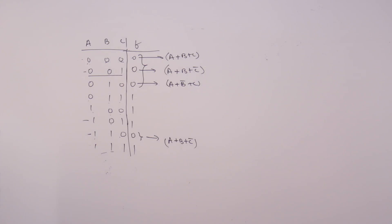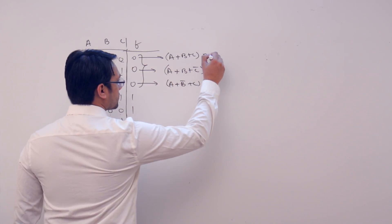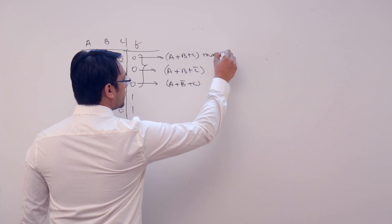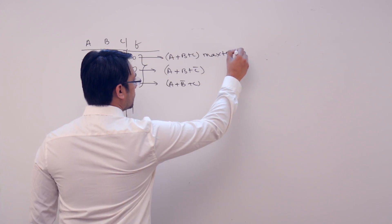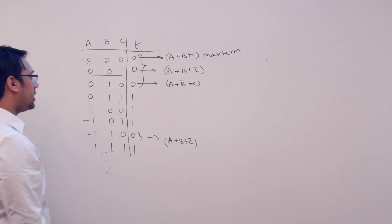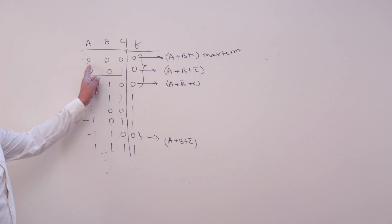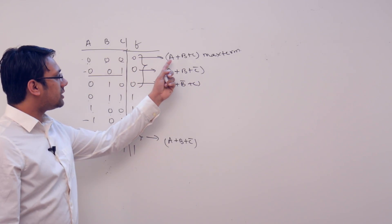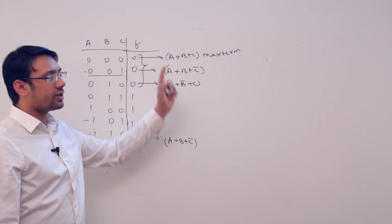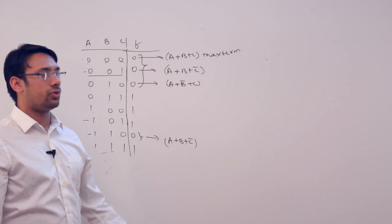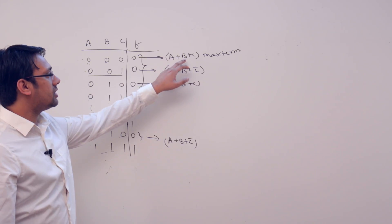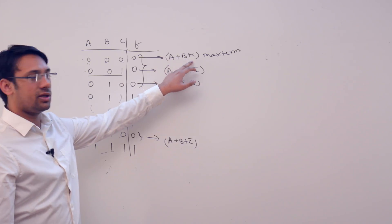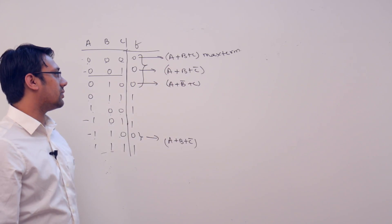Why I am representing these values like this is: this is a max term, and this max term will assume a value 0 only if we pass 0, 0, 0. That means it will be having a value 0 only if we pass 0 in a, 0 in b, as well as 0 in c.